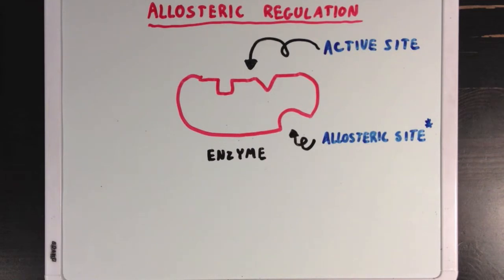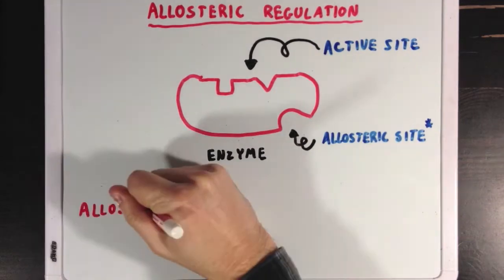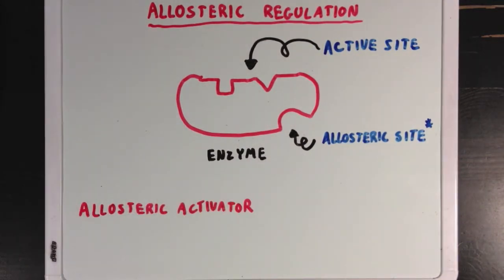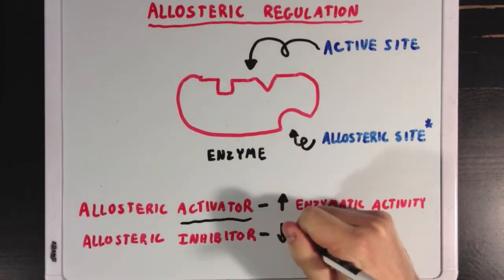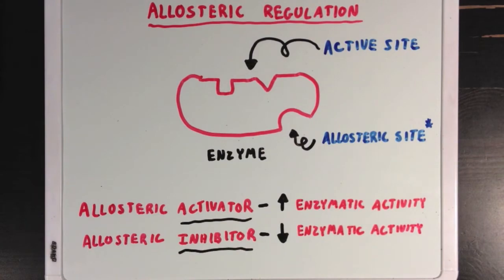So what do we mean when we say regulators? We generally say that there are two types of regulators. There are allosteric activators, which increase enzymatic activity and activate them, and allosteric inhibitors, which decrease enzymatic activity and inhibit the enzymes.